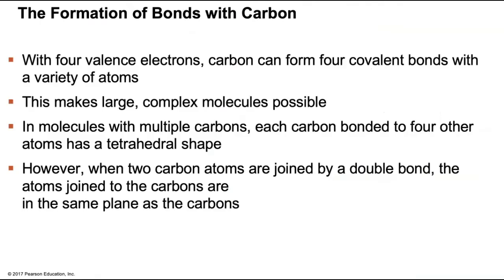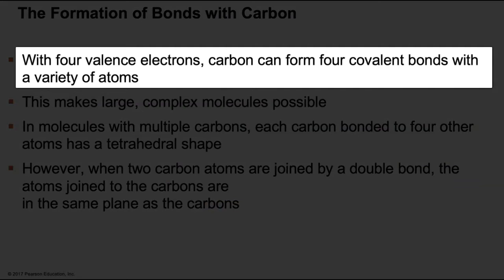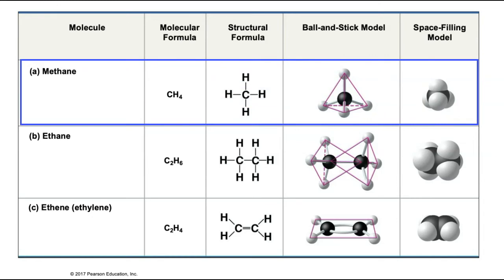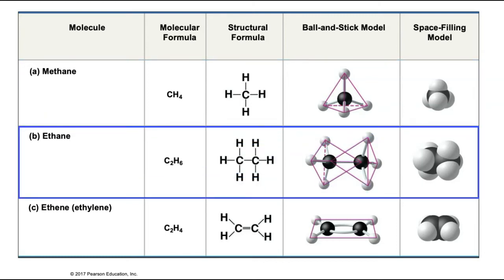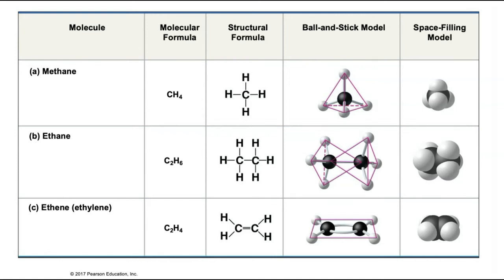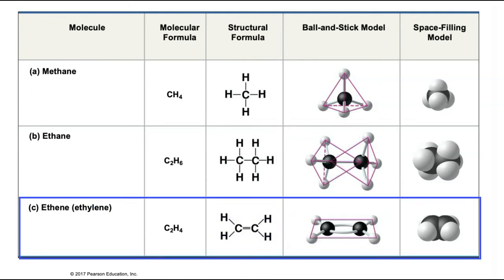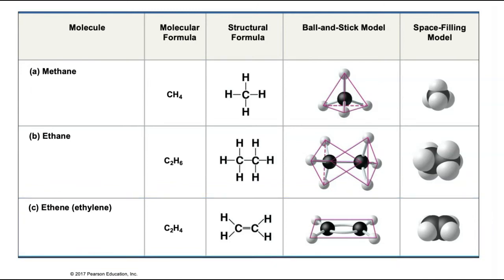Carbon has four valence electrons and wants to fill its valence shell with four more, so it will form four covalent bonds. Methane is CH4 — one central carbon with four single covalent bonds to hydrogens. Ethane is C2H6 — when we build organic molecules we always start with creating a chain of carbons. In ethane there are two central carbons attached with a single bond, with three single-bonded hydrogens off each carbon. Ethene or ethylene introduces double bonds — the two central carbons are now double bonded together, with each central carbon having only two hydrogens emanating.